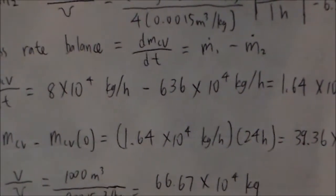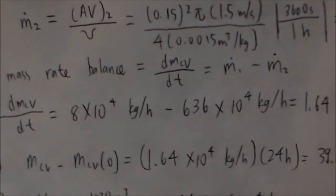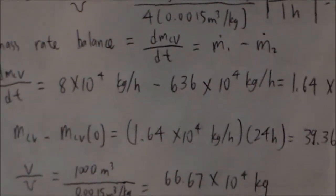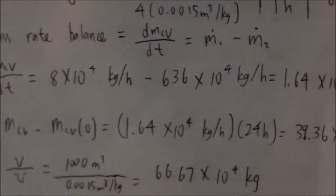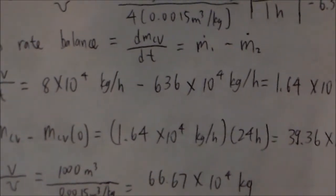The initial mass is equal to the initial volume divided by the specific volume. After performing the calculations, you would get 66.67 times 10 to the 4 kilograms.